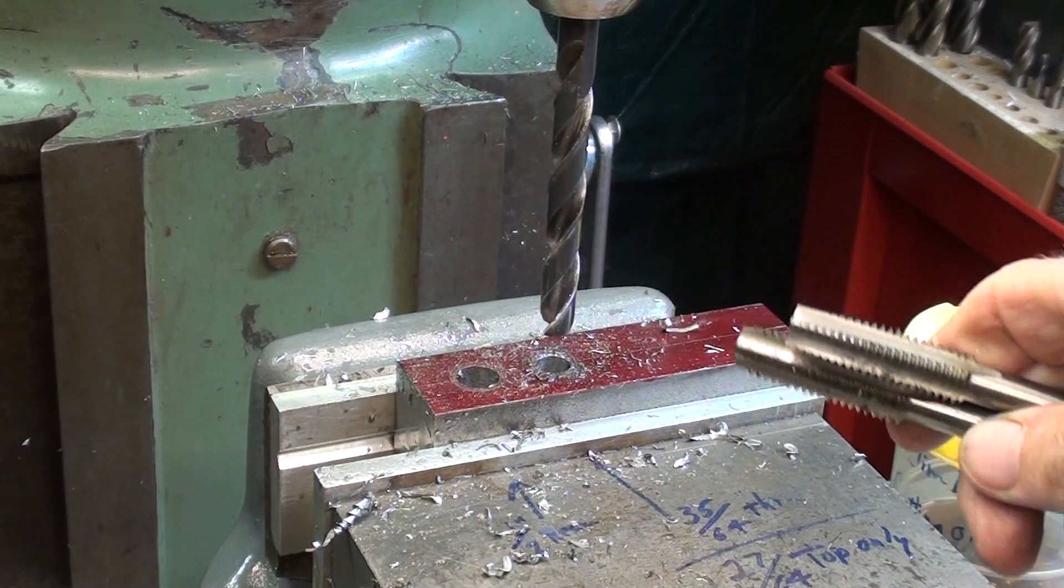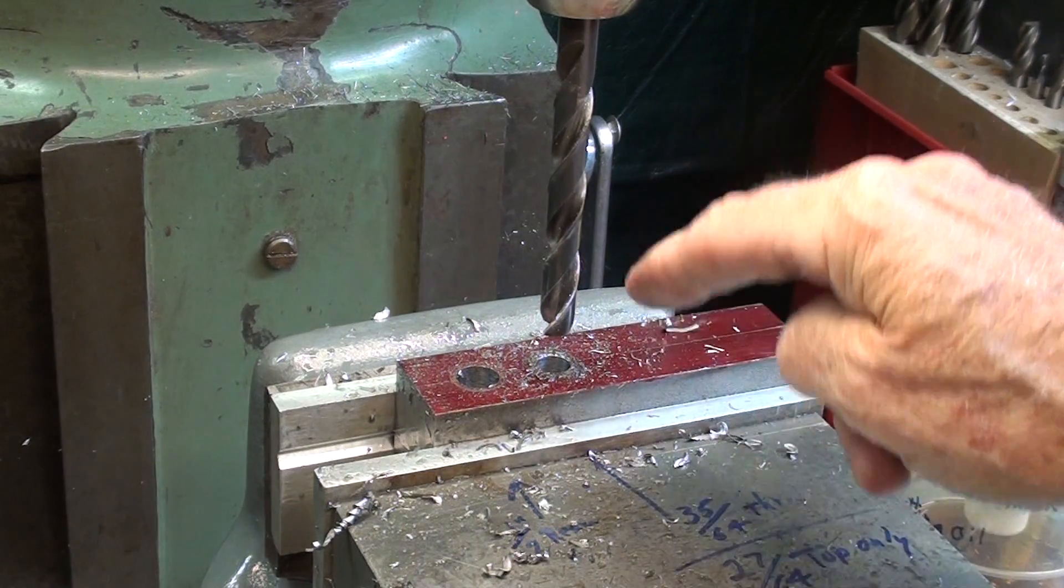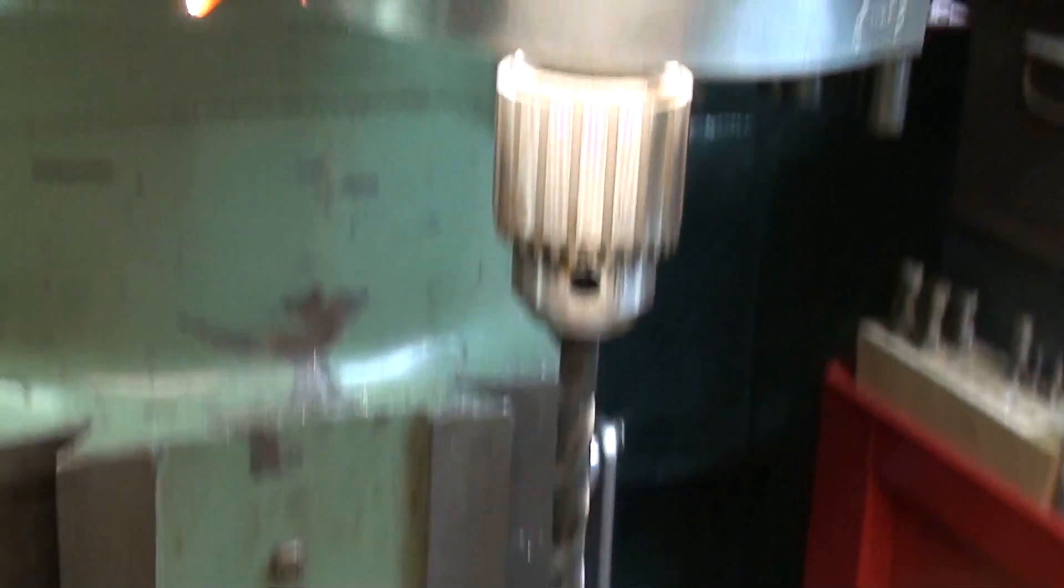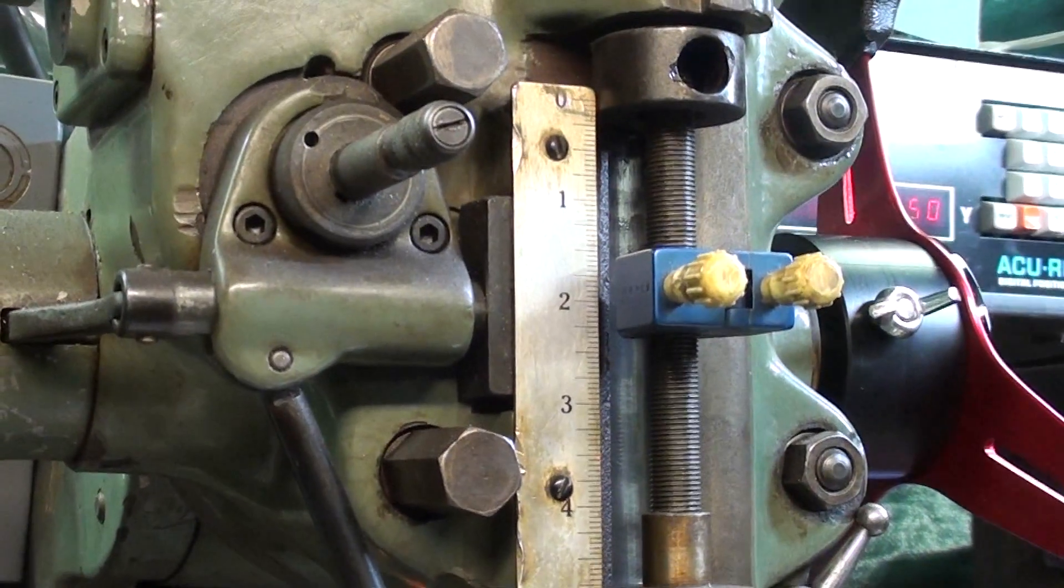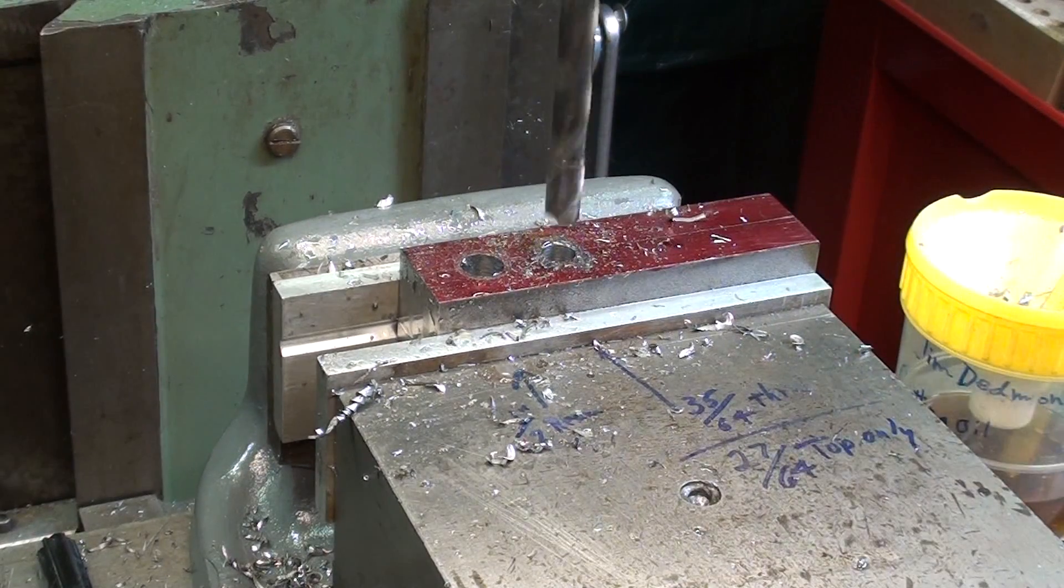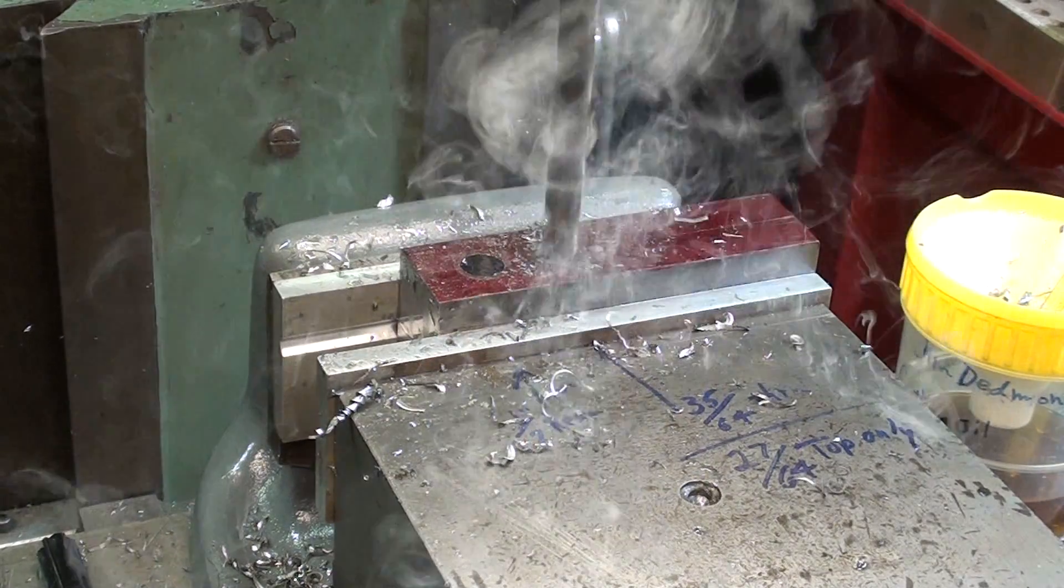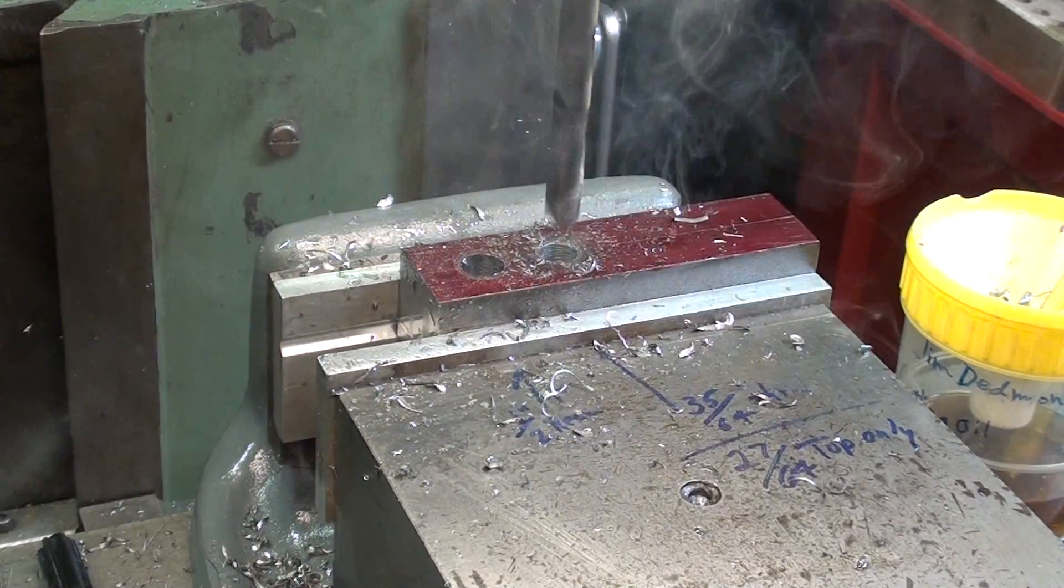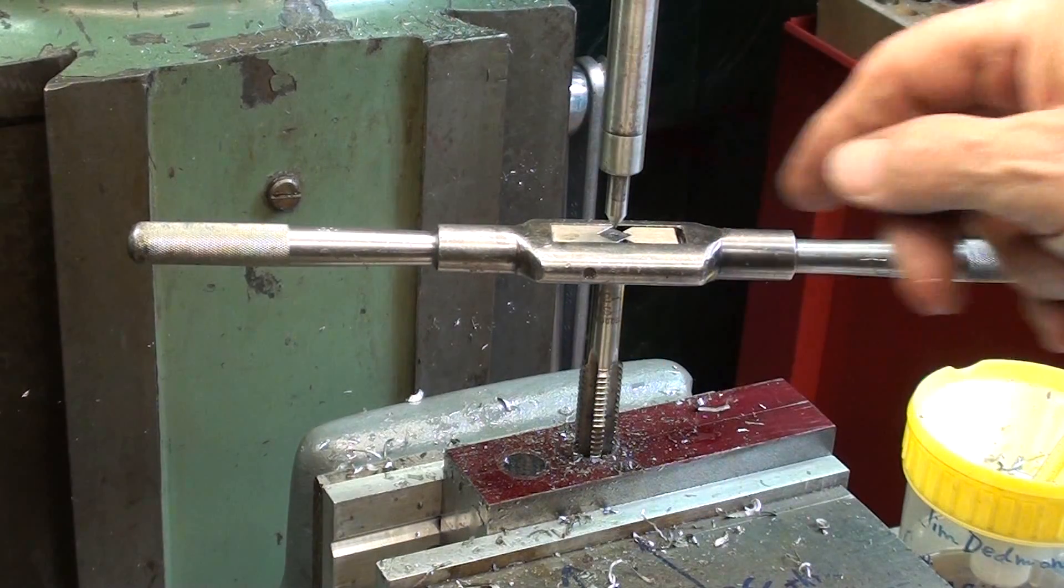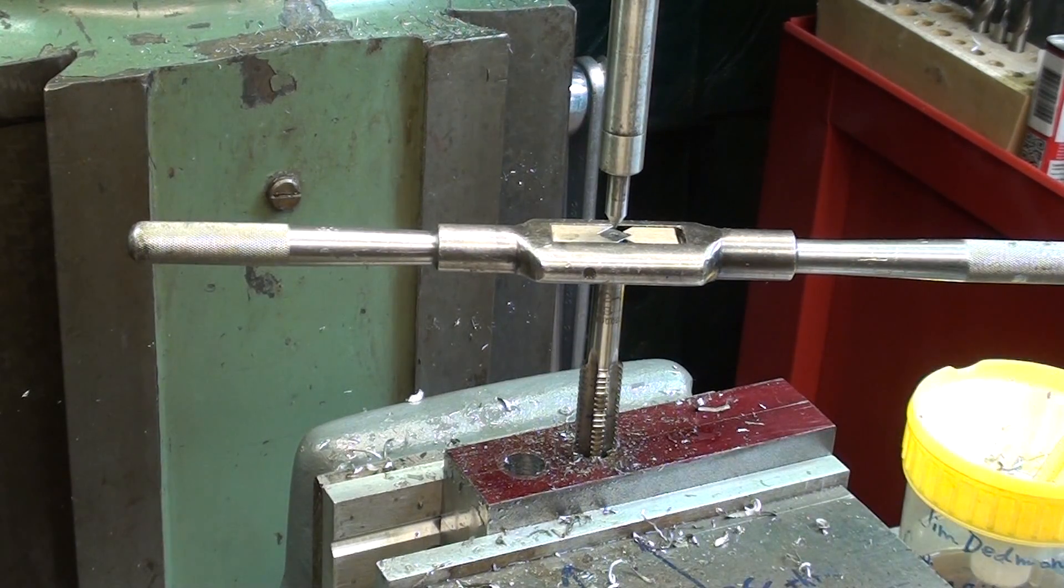Now, this is a 27/64, and that is the tap drill size for 1/2-13, and I'm drilling through only the top piece. Very, very important. Don't drill through both. And I already set the stop here, so that I won't go too deep. This is a 1/2-13 tapered tap. I'm set up with a tap follower and a tap wrench. And remember, I'm only threading into the top piece.